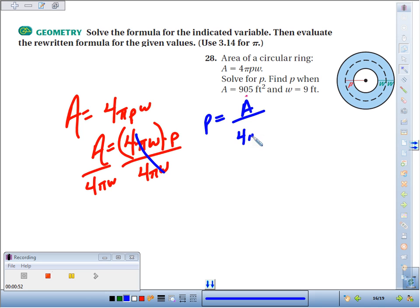Second part of the problem: evaluate the rewritten formula for the given values. So how do I find P if the area is 905 square feet? I'll substitute that for A. We've got 4 times π, they tell us to use 3.14, times W, which they tell us is 9 feet.